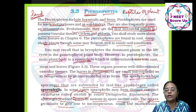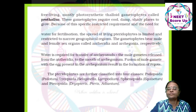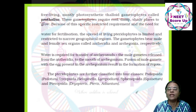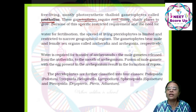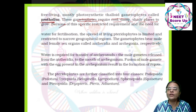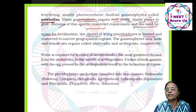The sporangia produce spores by meiosis in spore mother cells. The spores germinate to give rise to inconspicuous, small but multicellular, free-living, thaloid gametophytes called prothallus. These gametophytes require cool, damp, shady places. Due to these specific restricted requirements, water is needed for fertilization, and the spread of living pteridophytes is limited to restricted narrow geographical regions.